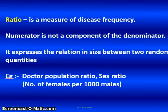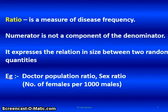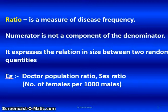Ratio is a measure of disease frequency. One important thing is that the numerator is not a component of the denominator. It expresses the relation in size between two random quantities — for example, doctor-population ratio (number of doctors per 1,000 population) or sex ratio (number of females per 1,000 males). So the numerator is not a component of the denominator.